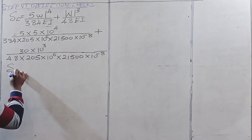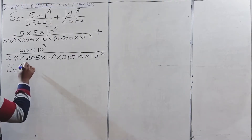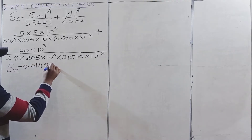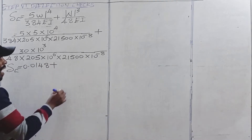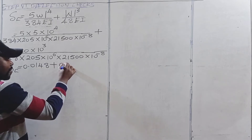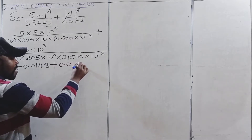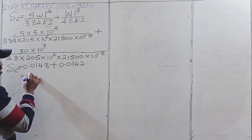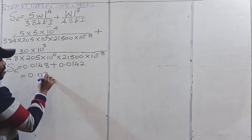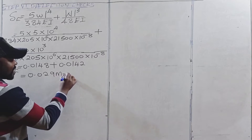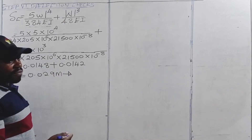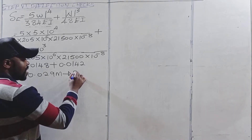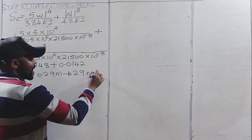This gives us a deflection of 0.0148 meters plus 0.0142 meters, which gives a total of 0.029 meters. When we convert to millimeters by multiplying by 1,000, that is 29 millimeters.